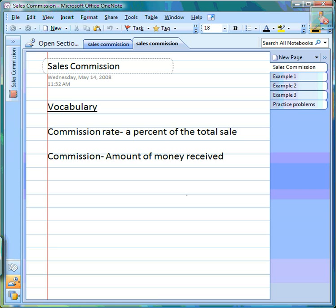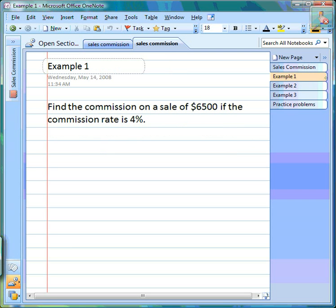Section six talks about sales commission, which is very similar to sales tax. First, the vocabulary: commission rate is a percent, so you're always looking for a percent. Commission is an amount of money received. When you have answers related to commission rate, label them with a percentage sign. For commission answers, put a dollar sign in front.